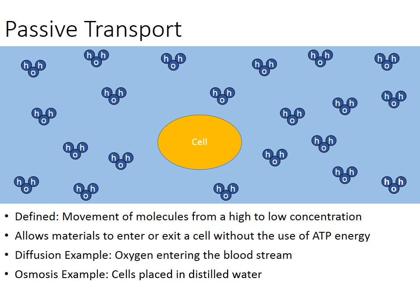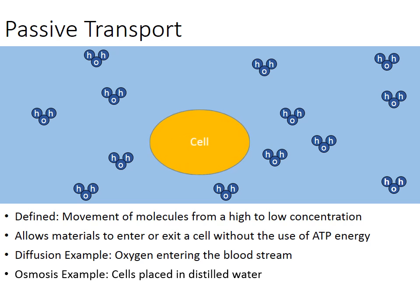Another example of passive transport is osmosis, which is really the same thing as diffusion, only it's the diffusion of water. Here's a cell that's been placed in distilled water. Distilled water is highly concentrated — it's pure H2O. The high concentration of water is on the outside of the cell, but inside the cell there's a lower concentration. So through osmosis, water molecules will diffuse into the cell and the cell will expand, possibly to the point where it could even burst.